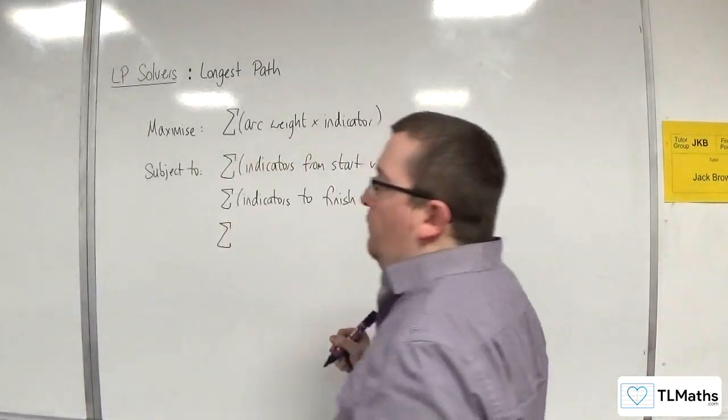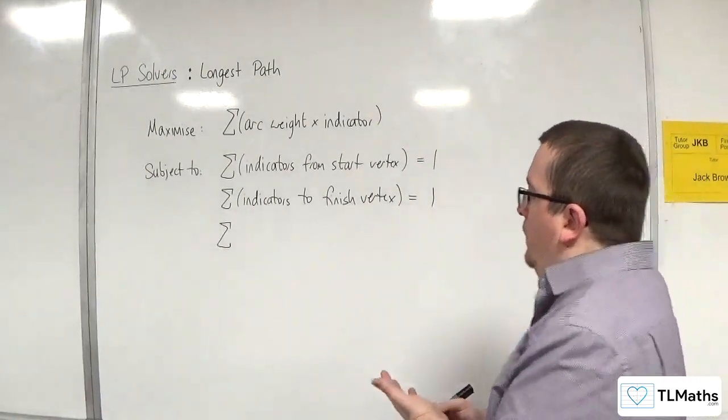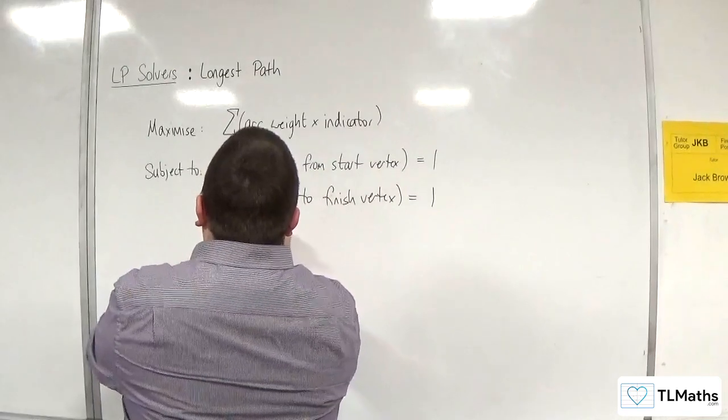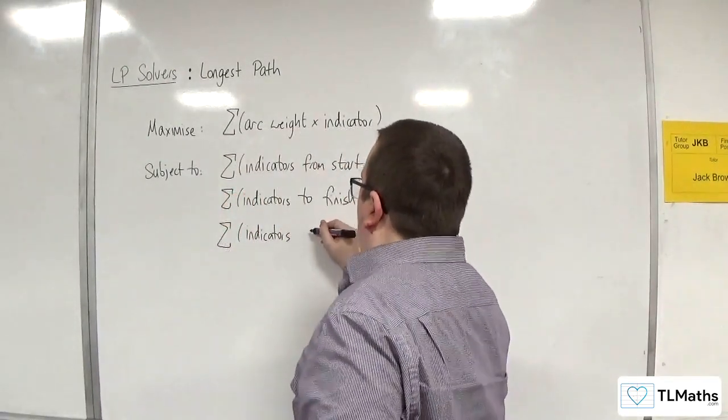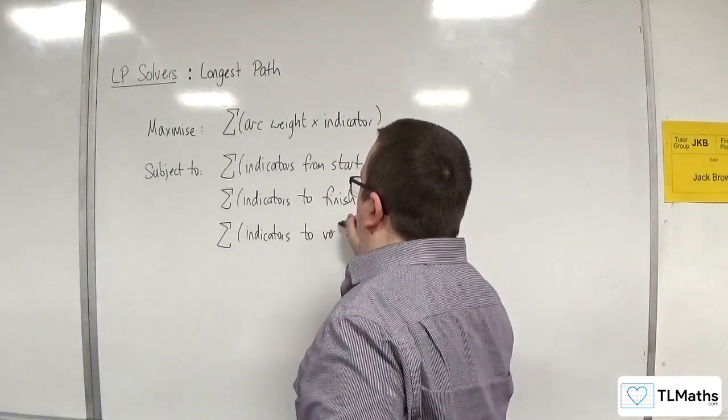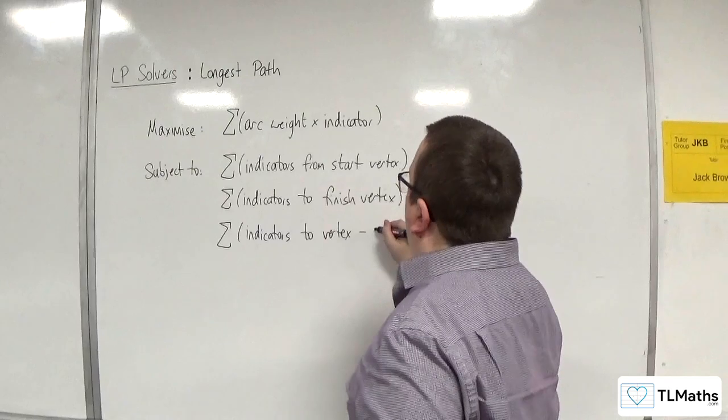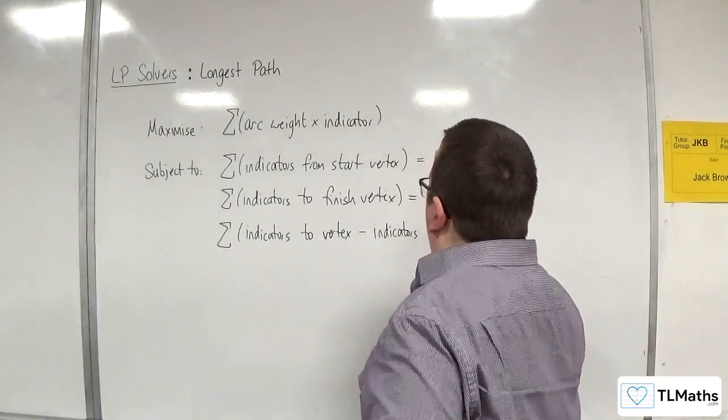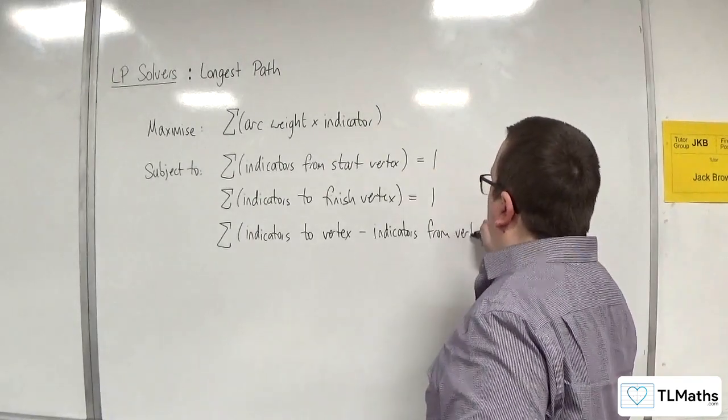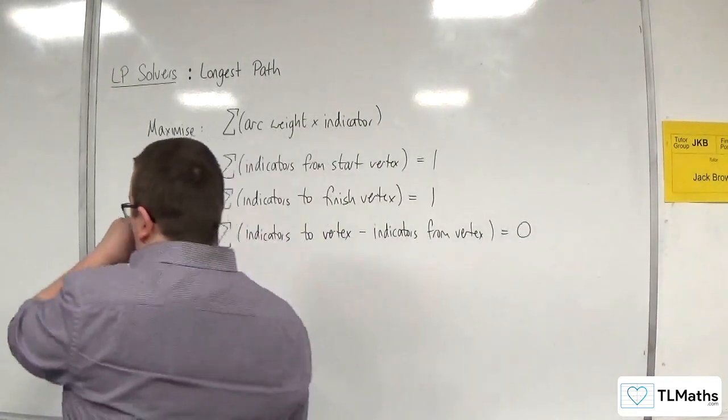Then we've got a constraint for each of the other vertices, which is the sum of the indicators to each of the vertices. So to the vertex, and then you take away the indicators from the vertex, and that's got to be equal to 0 because they'll cancel each other out.